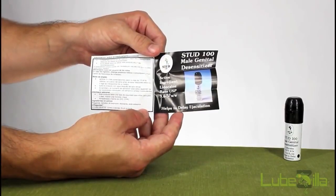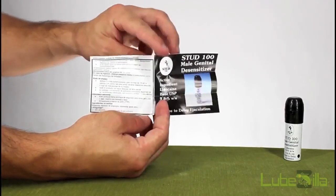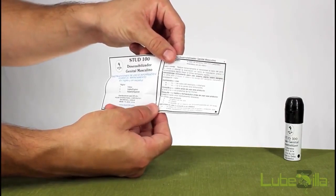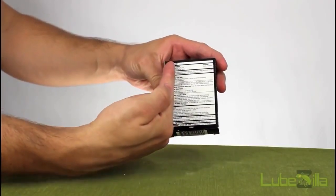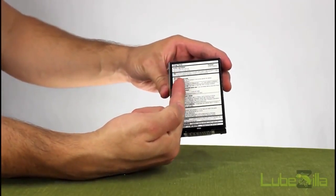Inside each box, you will find an instructional pamphlet loaded with information to help you end your battle against premature ejaculation. Important drug facts and ingredient information can also be found on the back of the box.